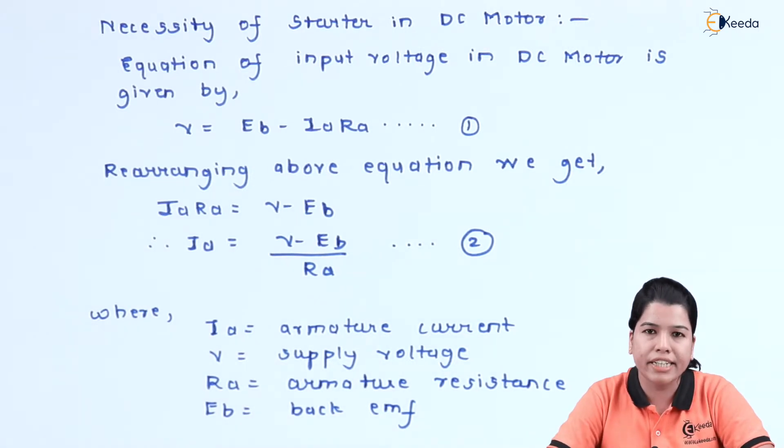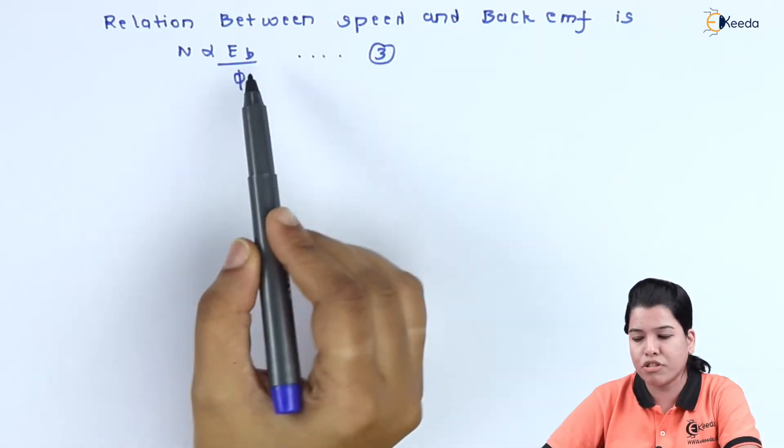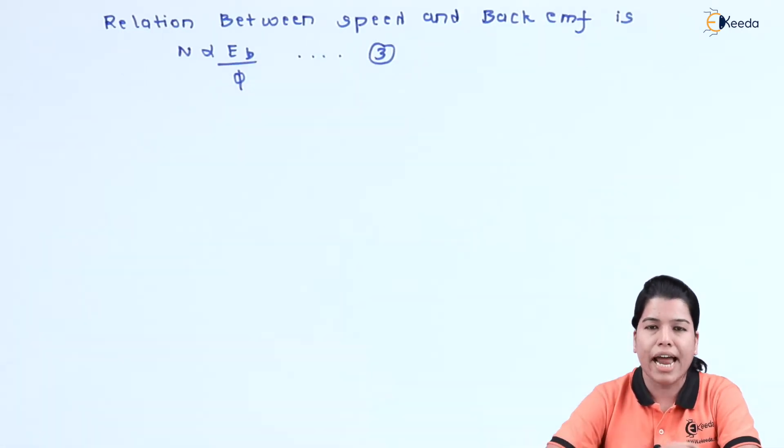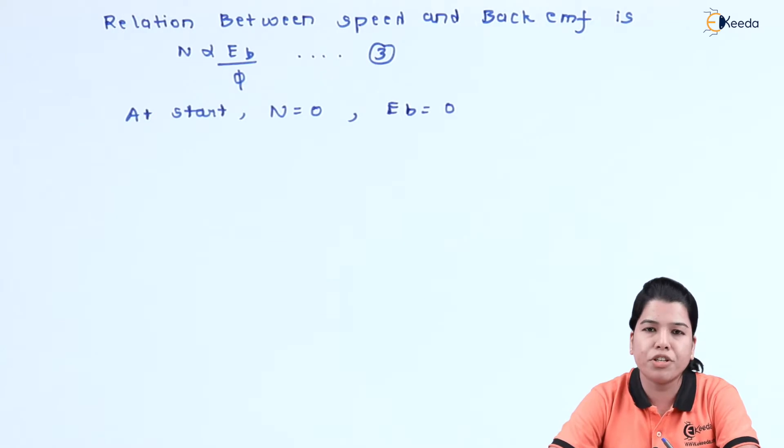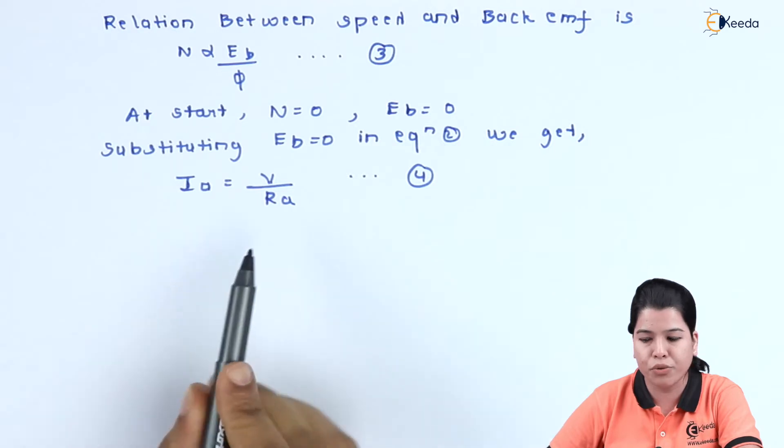Now when we are just starting the motor, at that time the speed is zero. Hence, the back EMF is also zero, because there is a relation between speed and back EMF which is given by N is directly proportional to Eb by phi. At starting, the speed of the motor is zero, hence the back EMF is also zero.